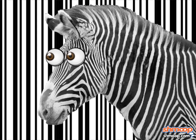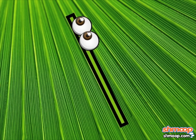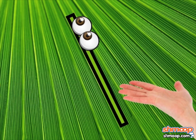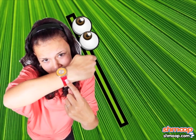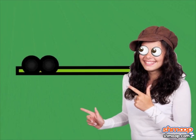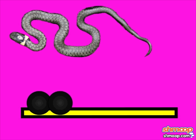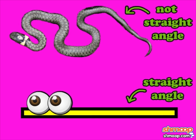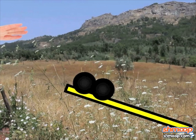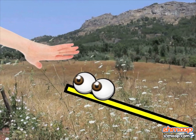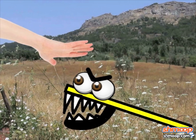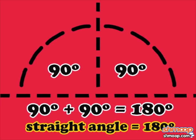The final type of angle hides in plain sight — it's sort of the chameleon of the angle world. Take a gander at this image and tell us where the angle is. It might look like a plain old line, but it's technically a straight angle. Be careful when handling one — those straight edges will get you. A straight angle can only be exactly 180 degrees.